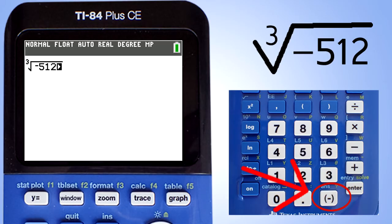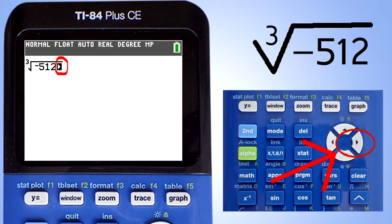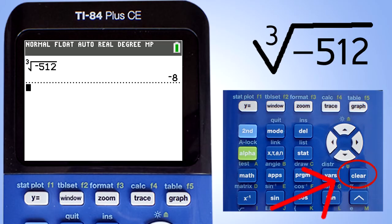Make sure to use the negative sign here and not the minus sign. Click the right arrow button to get that blinking cursor out from under the radical sign. Now press the enter key to solve this cube root. And there is the answer, negative 8. Press the clear button for our next problem.